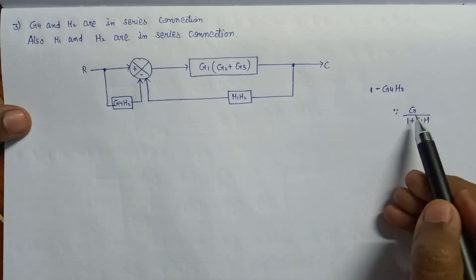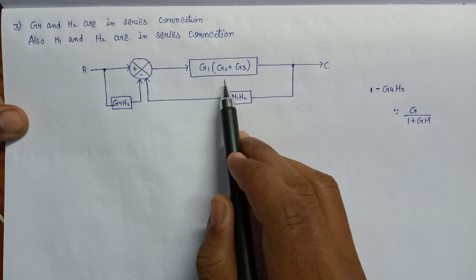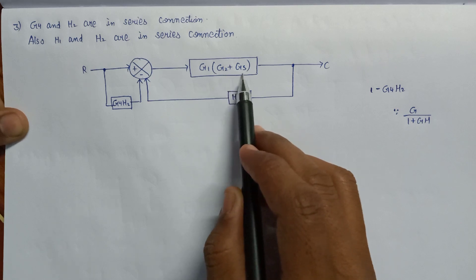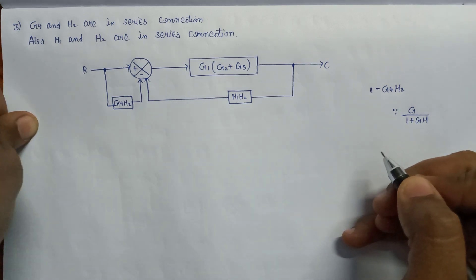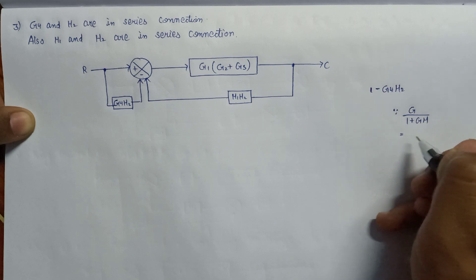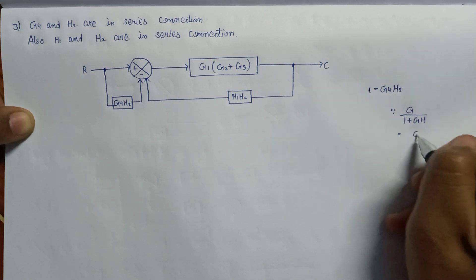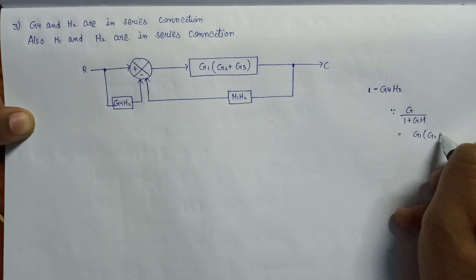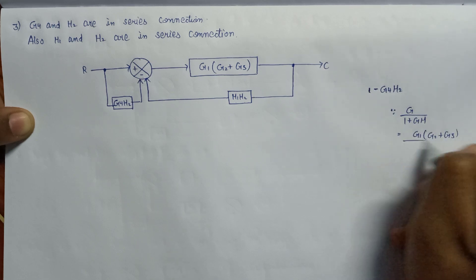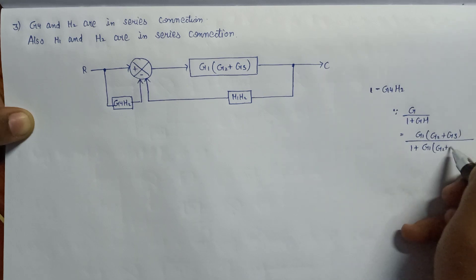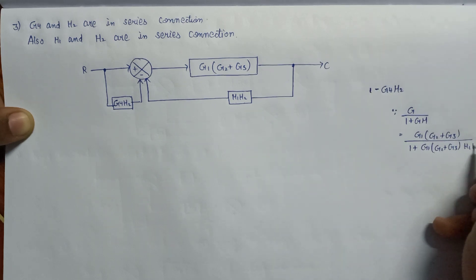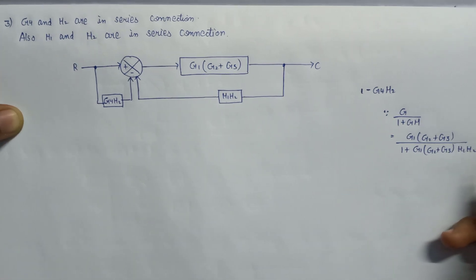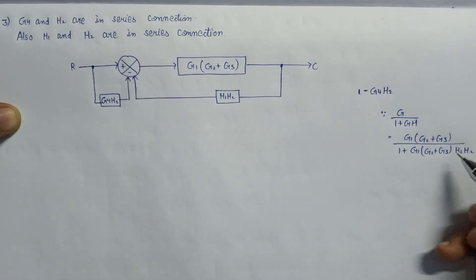We know that the transfer function for negative feedback is equal to G over (1 plus G·H). Here, the value of G is G1 multiplied with (G2 plus G3), and the value of H is H1·H2. Substituting these values, we get the equivalent gain equals G1(G2 plus G3) divided by 1 plus G1(G2 plus G3)·H1·H2. This is the equivalent gain.